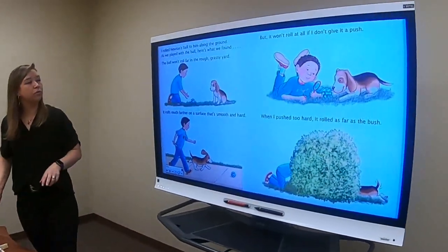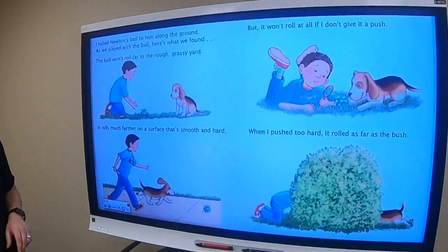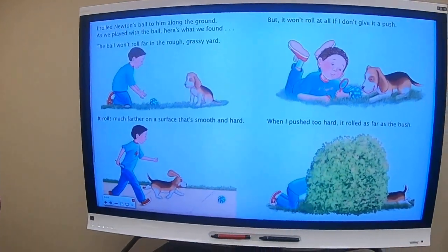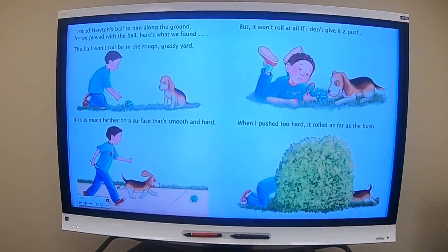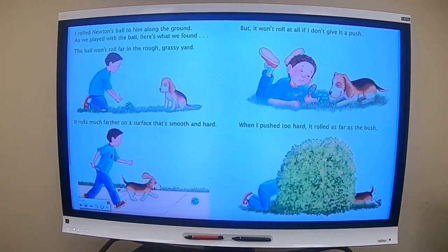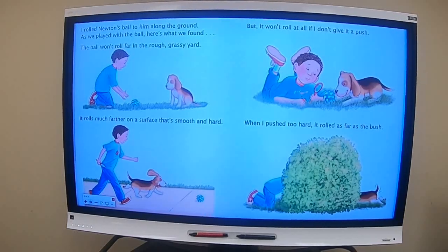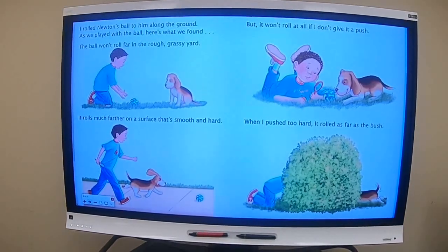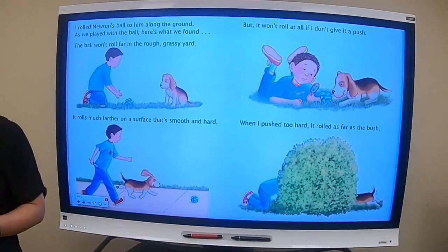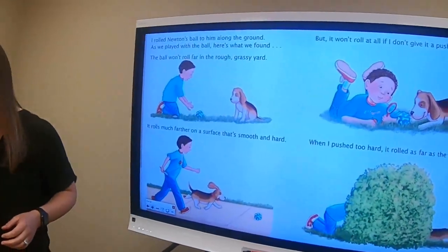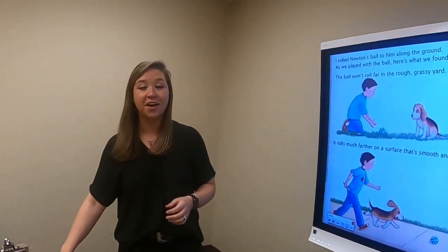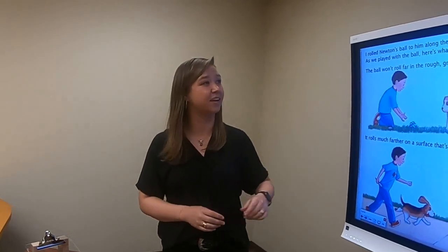I rolled Newton's ball to him along the ground. As we played with the ball, here's what we found. The ball won't roll far in the rough grassy yard. It rolls much farther on a surface that's smooth and hard. And guys, we'll talk about that in just a minute. If you saw when we did our ramp, our block actually slowed down and that's because of something called friction. So we'll get to that in just a second.